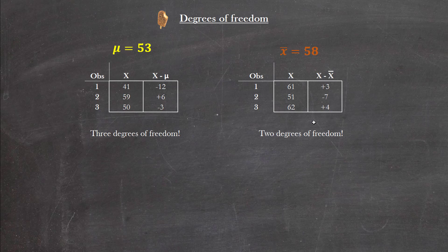In other words, there's only two independent pieces of information in this second data set. In other words, we can say there's two degrees of freedom, whereas in the first example there were three degrees of freedom. Each of these observations could be whatever they wanted to be.